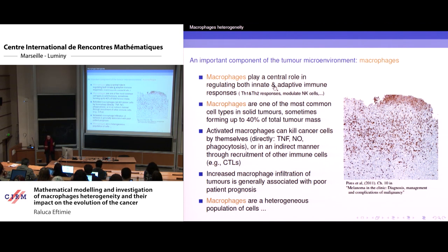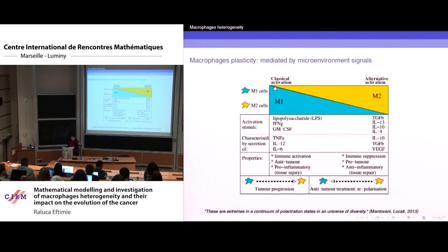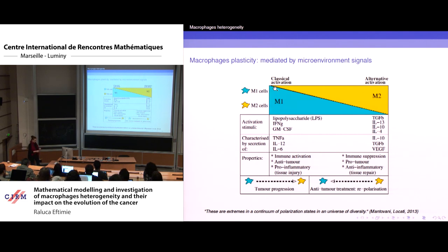But here's the problem. Many studies have shown that increased macrophage infiltration in tumors is generally associated with very poor patient prognosis. And why is that? Well, macrophages are a very heterogeneous population of cells.